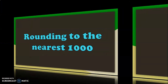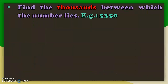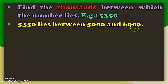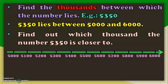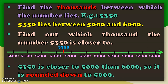Next, let us see rounding to the nearest 1000. Find the thousands between which the number lies. Consider the number 5350, which lies between the thousands 5000 and 6000. Using the number line from 5000 to 6000, 5350 lies closer to 5000. So, 5350 rounded off to the nearest 1000 is 5000.